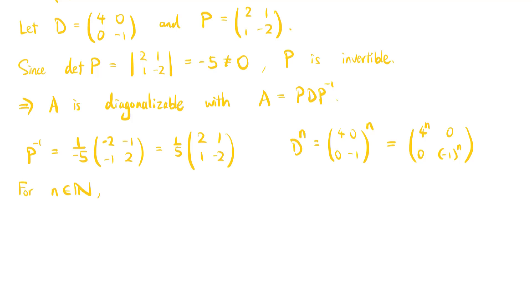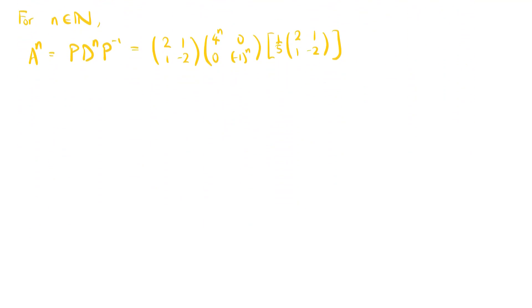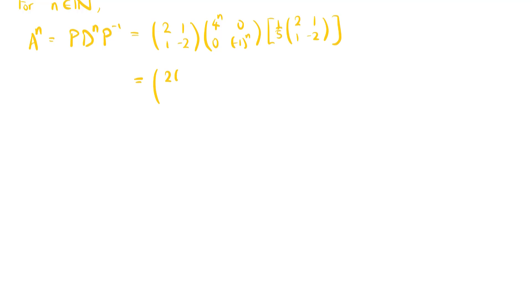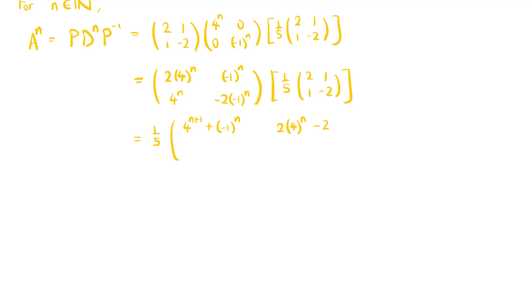Now, for a positive integer n, A to the n equals P times D to the n times P inverse, which equals the matrix [2, 1; 1, negative 2] times [4^n, 0; 0, (negative 1)^n] times (1/5) times [2, 1; 1, negative 2]. This gives (1/5) times the matrix [2·4^n + (negative 1)^n, 4^n minus 2(negative 1)^n; 2·4^n minus 2(negative 1)^n, 4^n + 4(negative 1)^n]. And this is the expression for A to the n.